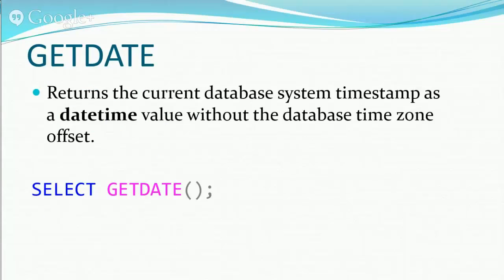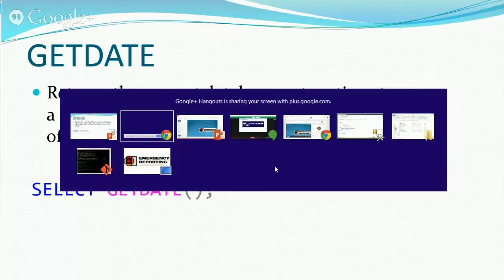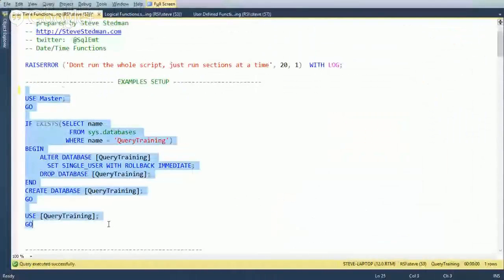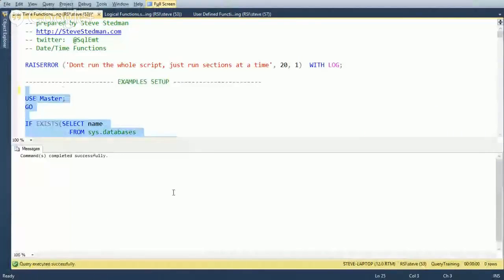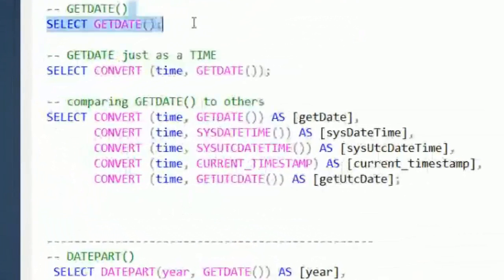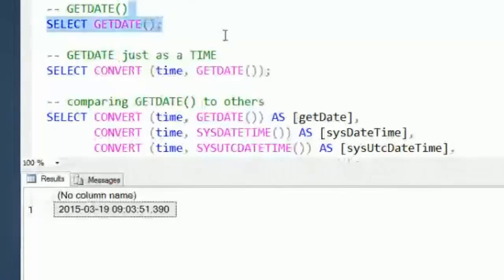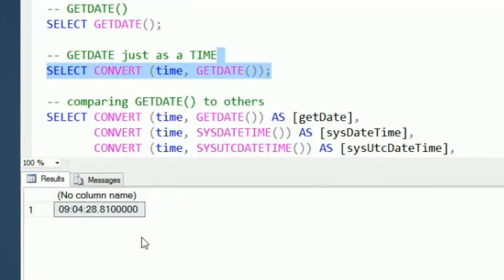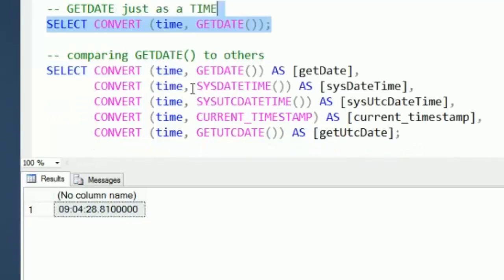So GETDATE is pretty straightforward. It's a function you call and it returns the current database system timestamp as a datetime value without the database time zone offset. Let's take a look at this now. We'll jump into some sample code, drop that and start fresh. If we want to get the time part out of that, we can use convert to time on GETDATE. There's not really just a get time that will give us the current time.